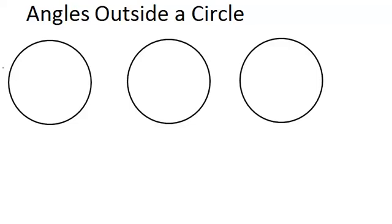So the first case is going to be if we have two tangent lines that intersect outside the circle. Each of those lines are tangent because they intersect the circle in just one point. So this is the two tangents example.